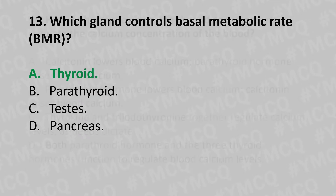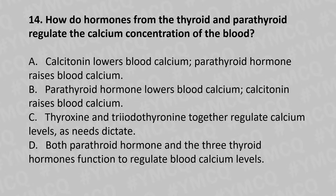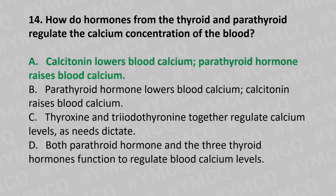Moving to our fourteenth question. How do hormones from the thyroid and parathyroid regulate calcium concentration in the blood? Option A: calcitonin lowers the blood calcium, parathyroid hormone raises the blood calcium. Option B: parathyroid hormone lowers the blood calcium, calcitonin raises it. Option C: thyroxin and triiodothyronine together regulate calcium levels. Option D: both parathyroid hormones and thyroid hormones function to regulate blood calcium. And the answer is Option A: calcitonin lowers the blood calcium, parathyroid hormone raises the blood calcium.